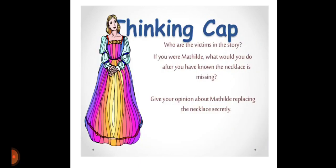Now let's think about a few things. Who are the victims of the story? If you were Mathilda, what would you do after you had known the necklace was missing? Give your opinion about Mathilda replacing the necklace secretly. Think about who are the victims of the story and what you would have done in Mathilda's place. Write your answers in your notebooks.